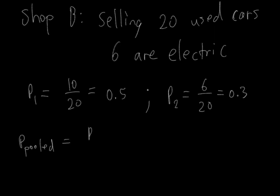We'll refer to the numerator of P1 as x1, and the numerator of P2 as x2. x1 is equal to 10, x2 is equal to 6. We'll call the denominator of P1, n1, and the denominator of P2, n2. The top is the number of electric, and the bottom is the total number of cars in the inventory.